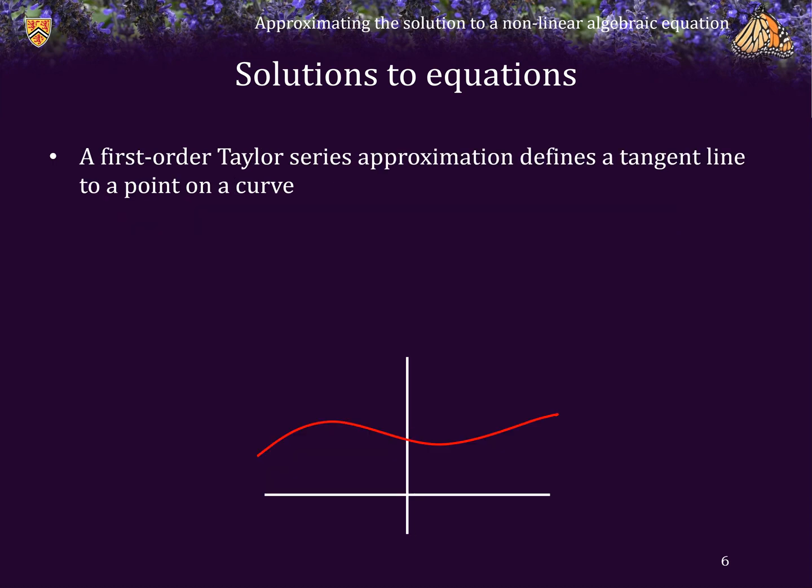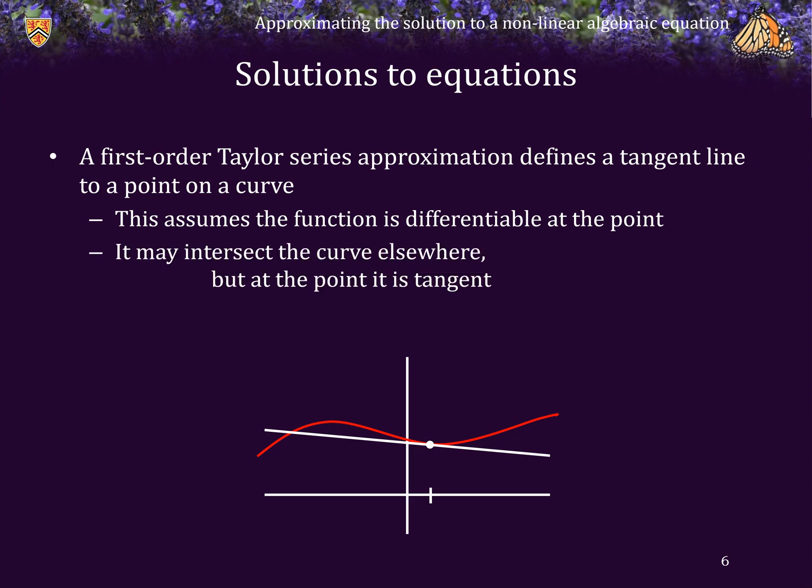Now, given a function, a first order Taylor series approximation defines a tangent line to a point on a curve. So, for example, at this point, if we find the first order Taylor series, we get a tangent line to the curve. Now, first of all, this does assume that the function is differentiable at that point. And also, that line may intersect the curve somewhere else, but at the point at which the Taylor series is expanded about, it is tangent to that curve.